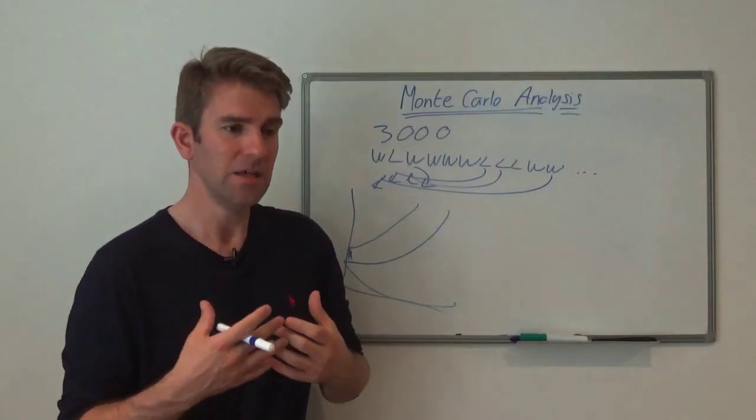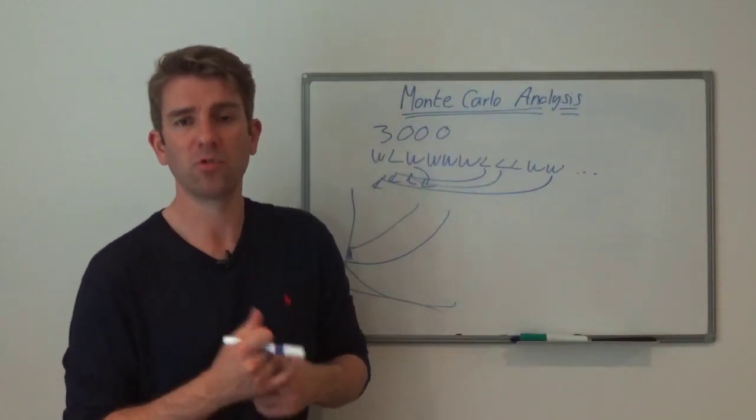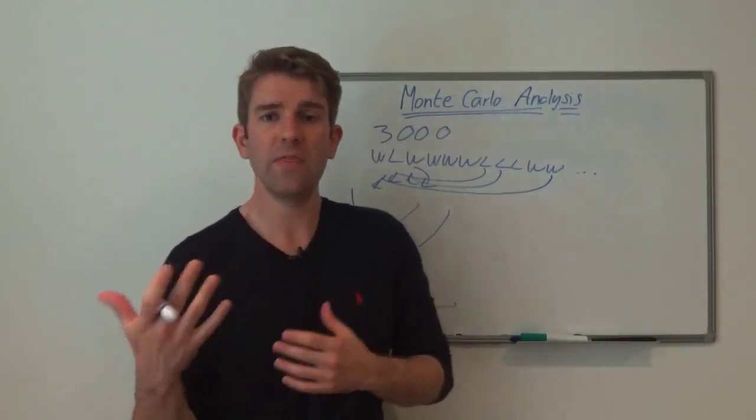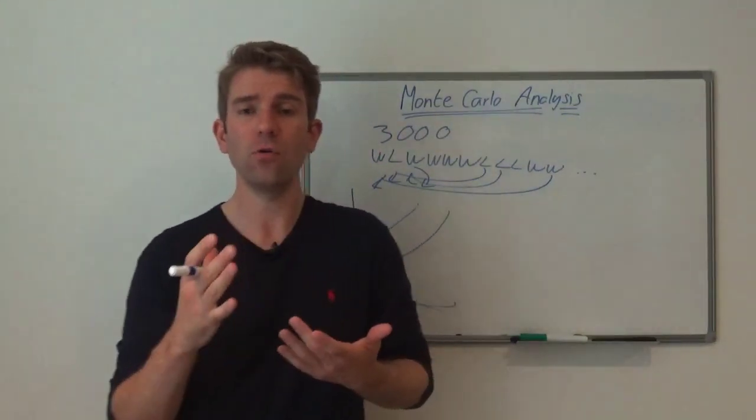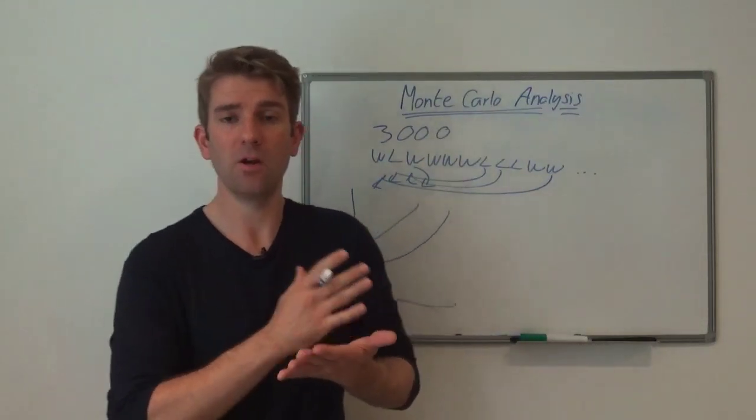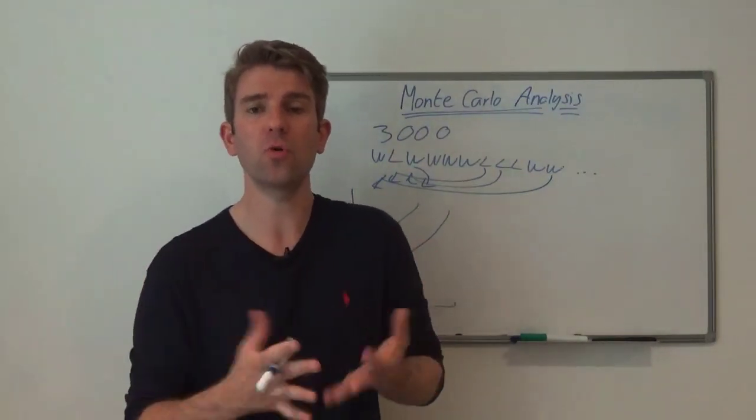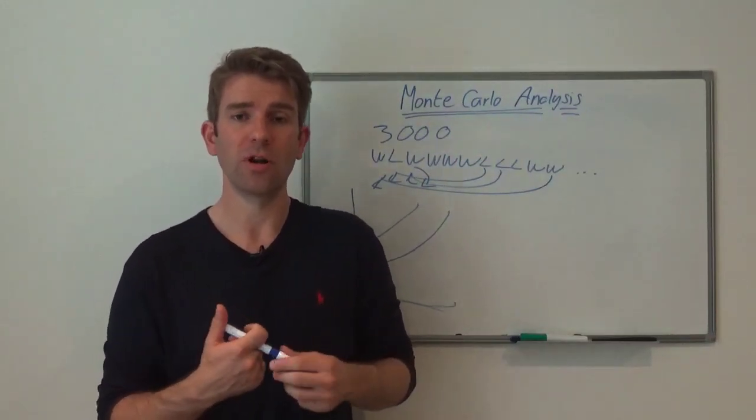The theory behind it is that you don't know with a system that says 55% are profitable when those profitable trades are going to come. They might come one, two, three, four. They might not come until the first ten. They might come every other one. You just don't know the order, but you know that over time that's the percentage results you're going to get.